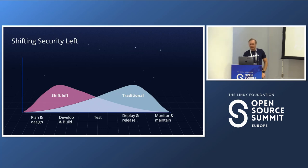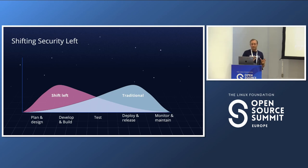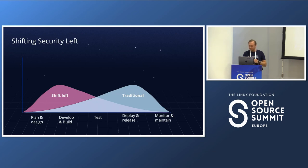This graph — not meant to be scientific — depicts the idea behind shifting left in security. Traditionally, a lot of testing was done close to the end of the cycle. With the shift-left approach, the idea is to move as much testing as possible further to the left in the process.